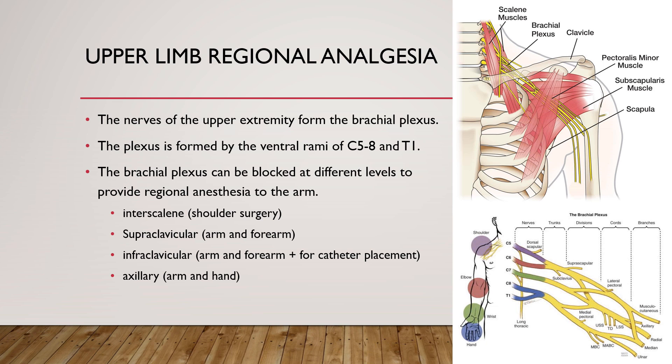The nerves of the arm and hand originate in the neck. These nerves form a complicated web called the brachial plexus, which is formed by the ventral rami of C4 to T1. This plexus ends in three main nerves — median, radial, and ulnar — which innervate most of the upper extremities.